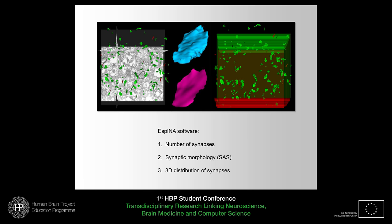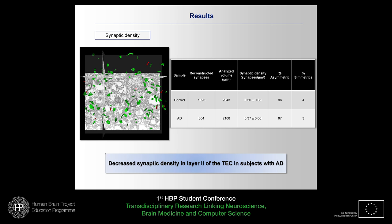These images are analyzed by specific software called Spine, which will be explained in detail by my colleague Marta in the last talk. With this software, we can reconstruct in three dimensions the objects of interest — in my case, the synapses — and we can obtain data about the number of synapses, their morphology, and their spatial distribution.